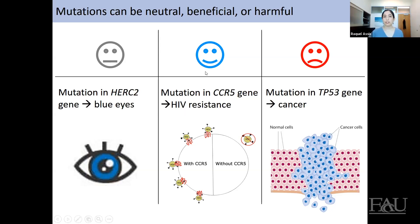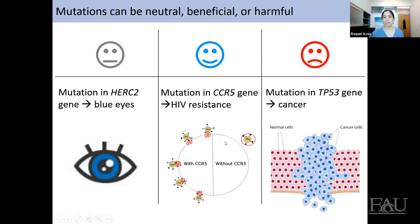A beneficial mutation that's quite common in humans is in the CCR5 gene — it confers HIV resistance, preventing you from getting HIV. Individuals with the normal copy of the CCR5 gene have the CCR5 protein embedded in their cell membranes, and HIV binds to that protein as a doorway to enter the cell. Individuals with the mutation in the CCR5 gene do not have the CCR5 protein on their cell membranes, so HIV has no way to get in. This gives them HIV resistance.